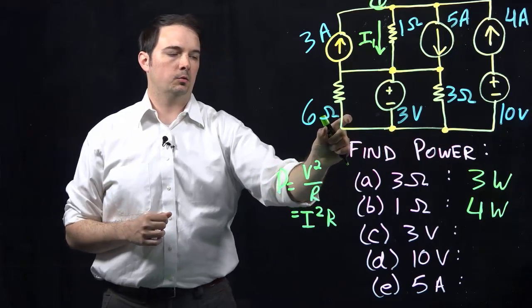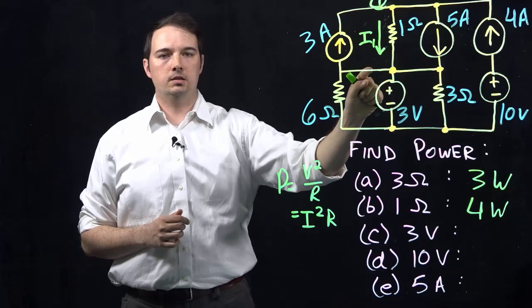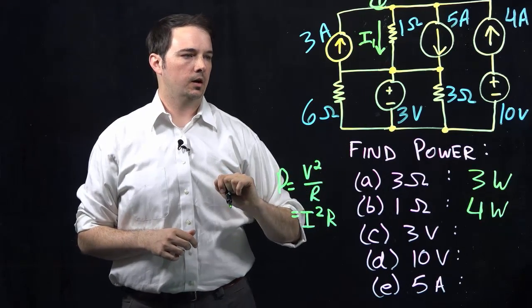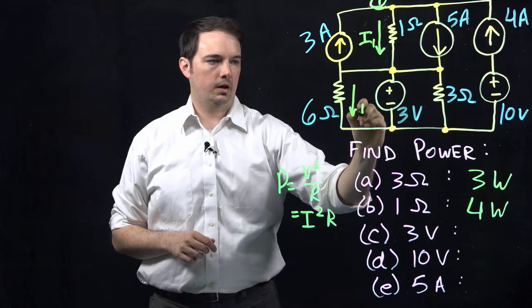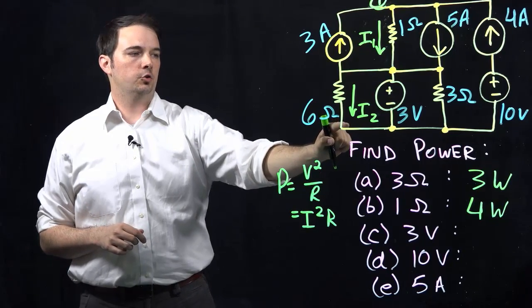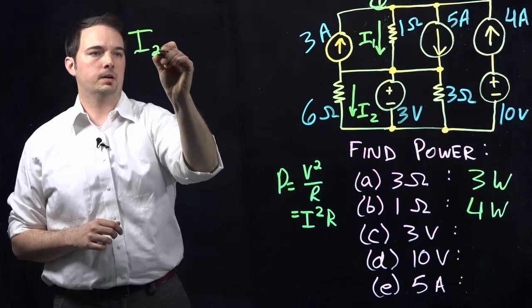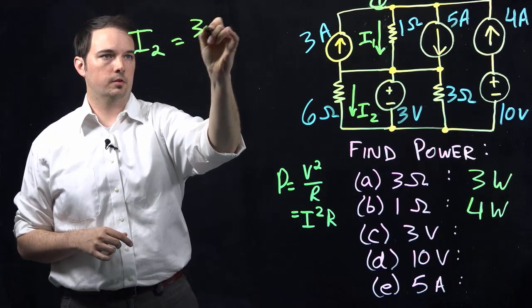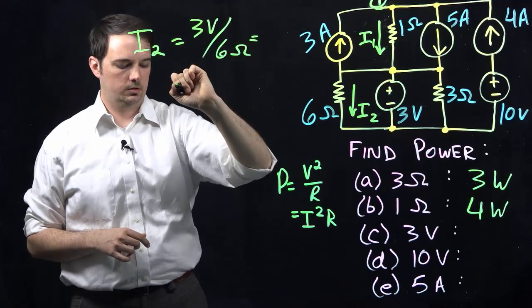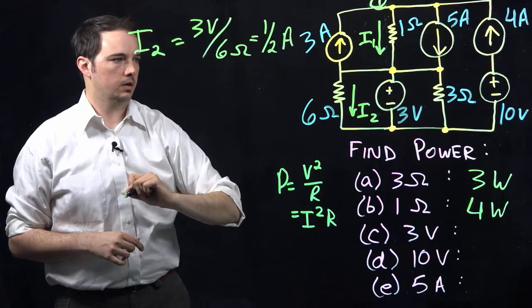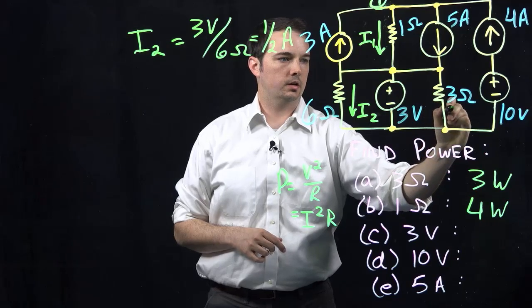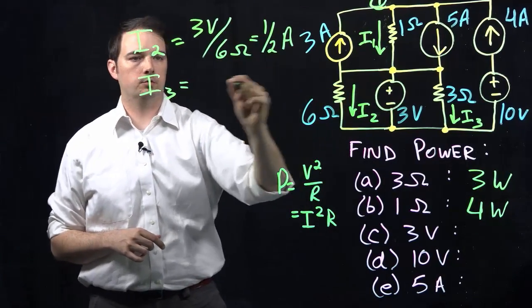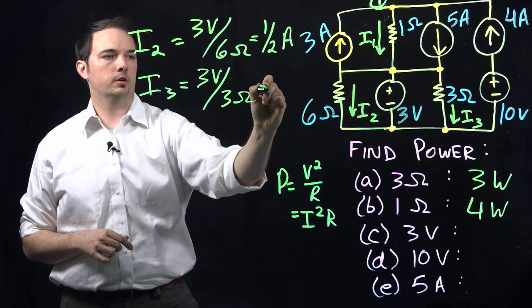We haven't figured out yet what the current flow through each of the other resistors is, and we'll need that to apply a KCL equation at this node to find the current through my 3 volt source. First, let's solve for the current through the 6 ohm resistor, which I'll call I2. Since the 3 volt source is in parallel — directly connected across the 6 ohm resistor — I can apply Ohm's Law: 3 volts over 6 ohms gives me one half of an amp. Similarly for the 3 ohm resistor, I'll call this I3: still 3 volts across that 3 ohm resistor divided by 3 ohms gives me 1 amp of current.